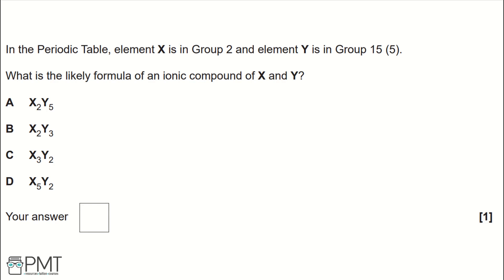The charge for an element in group 2 is plus 2, so X would have the charge plus 2, and for group 5, the charge is minus 3, so Y would have the charge 3 minus.